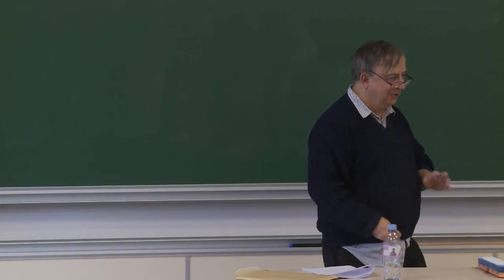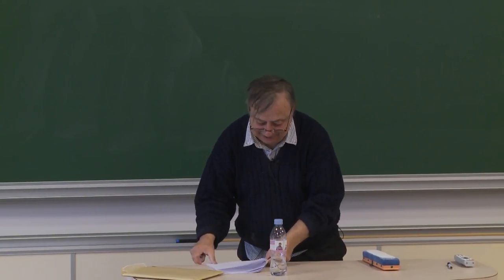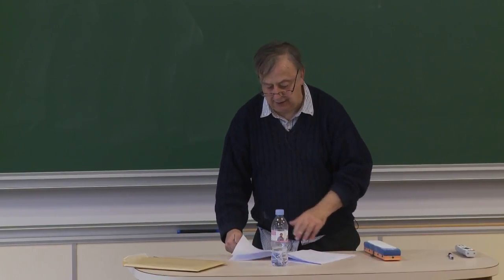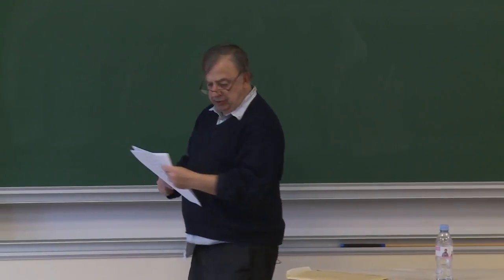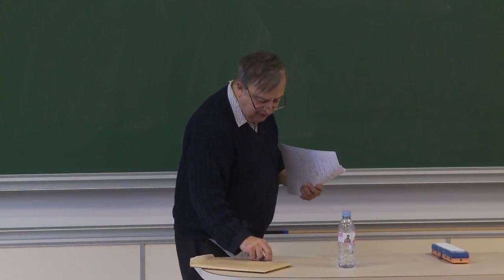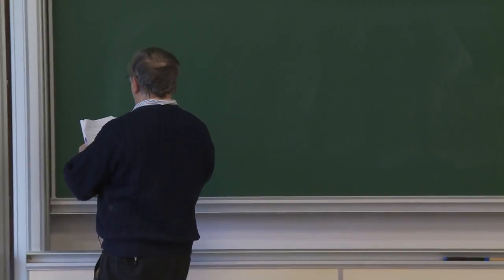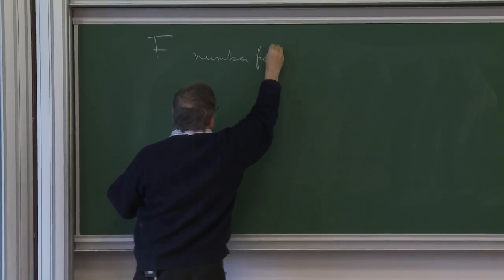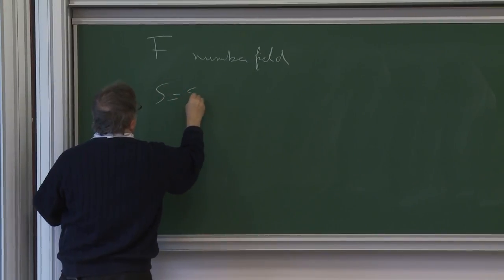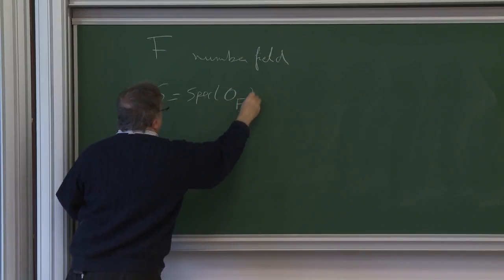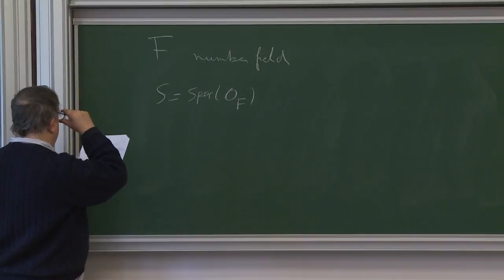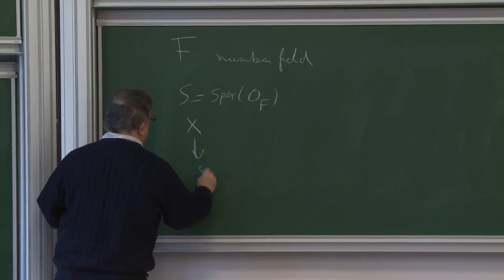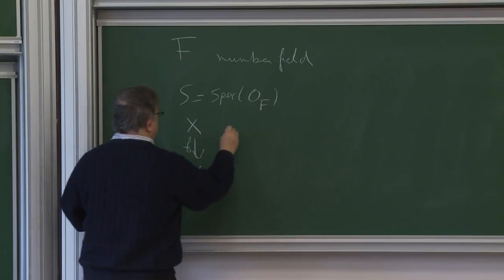So this situation we shall look at is slightly different from before. We shall take a number field, look at S the spectrum of the integers of F, and we shall assume that X over S is a semi-stable curve.